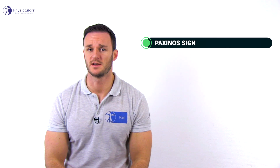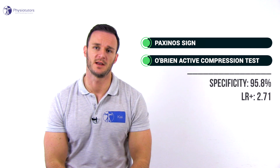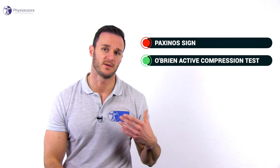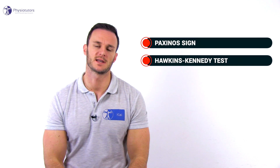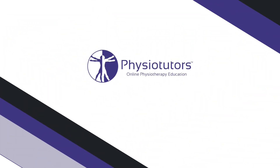A new systematic review by Krill et al. in the year 2018 has evaluated different special tests for the AC joint. A combination of a positive Paxino sign followed by a positive active compression test of O'Brien yielded a specificity of 95.8% and a positive likelihood ratio of 2.71 to confirm a symptomatic AC joint. A combination of a negative Paxino sign and a negative Hawkins-Kennedy test yielded a sensitivity of 93.7% with a negative likelihood ratio of 0.35. Although the systematic review used strict criteria, the diagnostic accuracy of these two clusters is rather low. At the same time, it is currently the best physical tool we have to diagnose a symptomatic AC joint, which is why we give those two clusters a moderate clinical value.